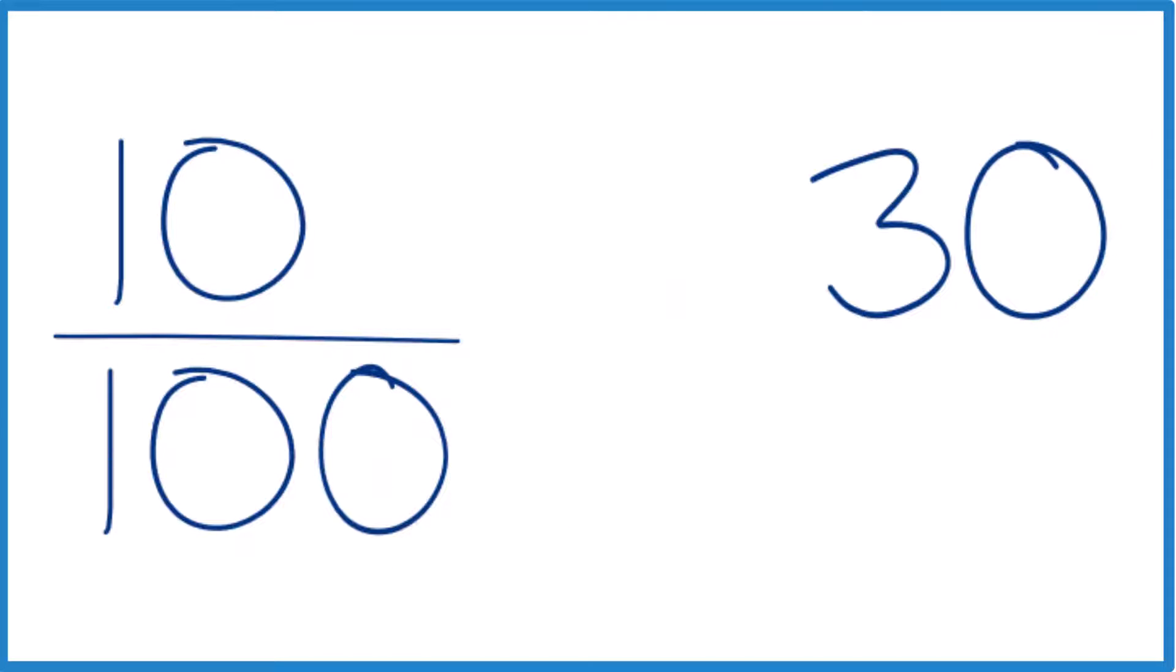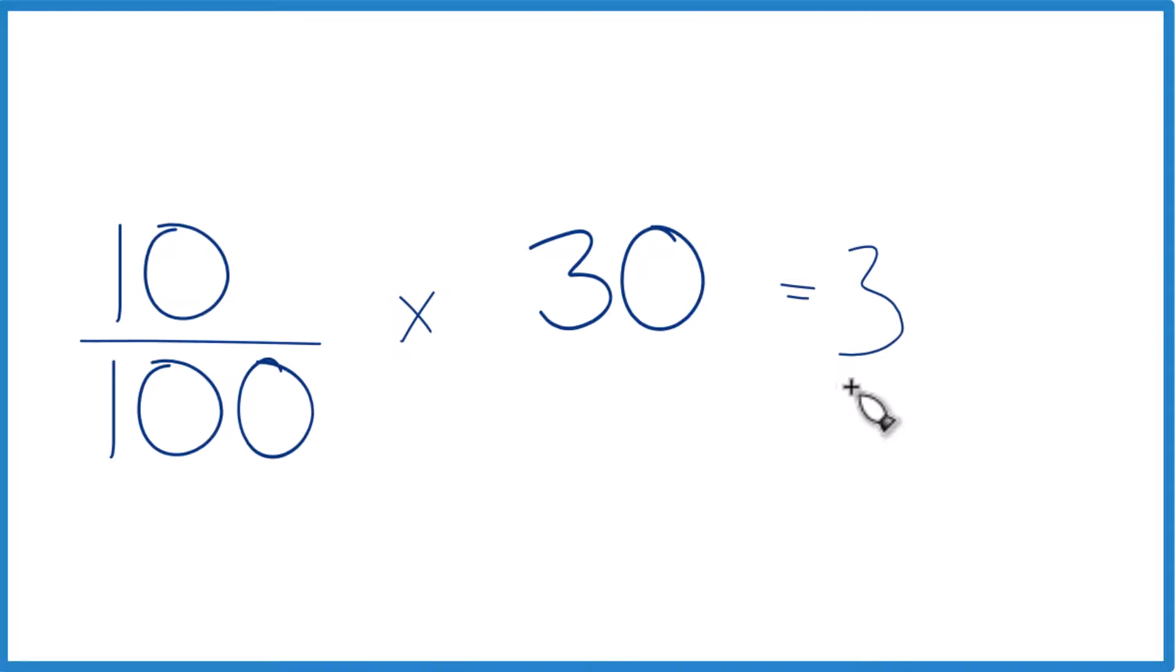And the of, we're going to call that multiplication. So 0.1 times 30, that just gives you 3. So that's one way to do it.